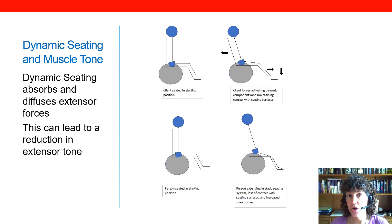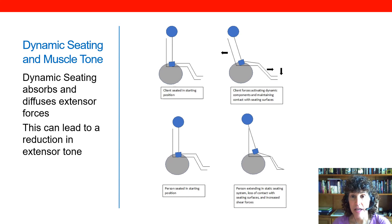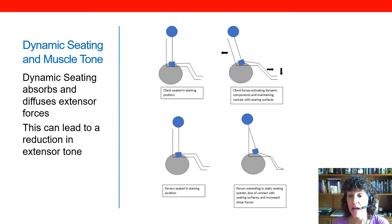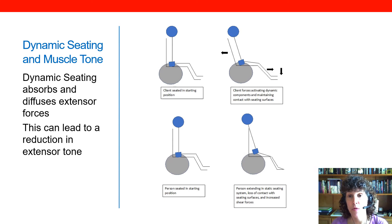Looking at this illustration, on the top we have a client in a seated position within their wheelchair. When that client extends at the hips and knees, we see this activating the dynamic components, and the client maintains contact with the seating surfaces. Below, we see a person again seated within their seating system, but this time there is no dynamic component — it's a static, non-yielding seating system. As the client extends, they now have increased shear forces because they're moving in relation to the seating surfaces; instead of the back moving with the client, the client is moving up and against the back, creating these shear forces.